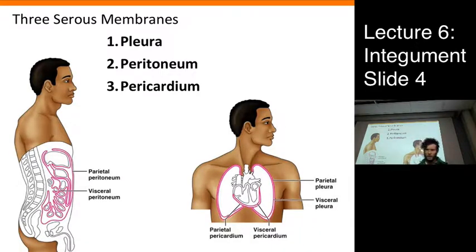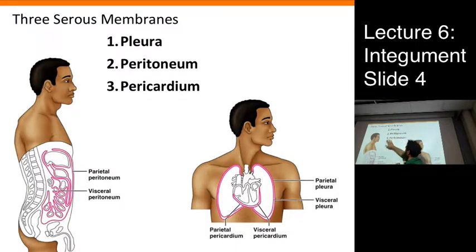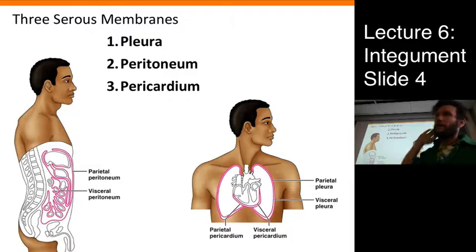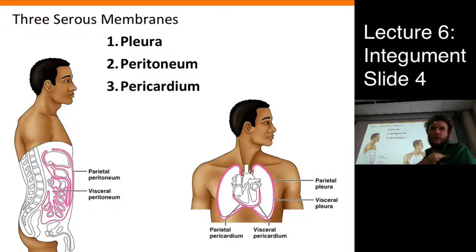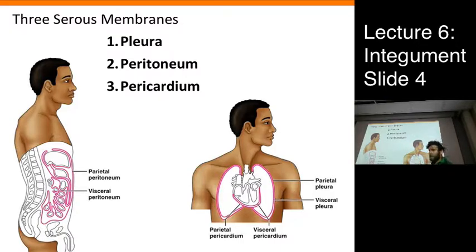There are three serous membranes, all with a parietal and visceral portion. The three types are: pericardium for the heart, pleura for the lungs — you may have read in Dickensian novels about old women with pleurisy needing to go to the coast; pleurisy is simply an inflammation of the pleura surrounding the lungs — and peritoneum.